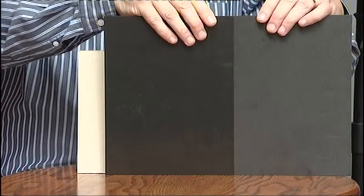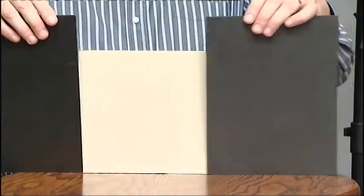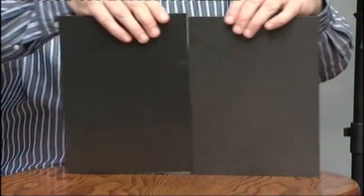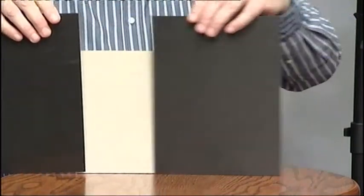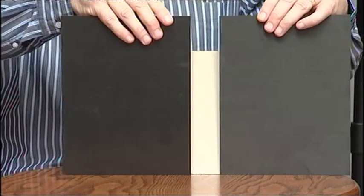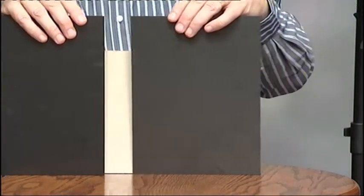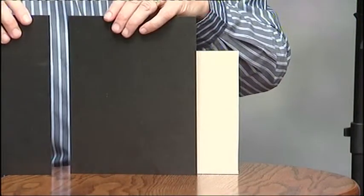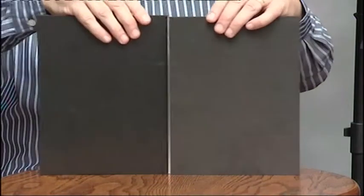As we increase the shutter speed the blades open and close faster. It gets to a point where they can't move any quicker so they start to work in a different way. They start to work together, traveling across the sensor leaving a gap between. This is how we get really fast shutter speeds on modern cameras.